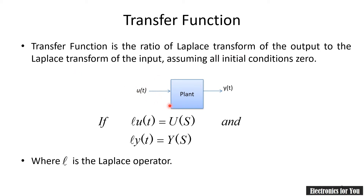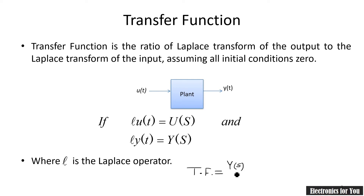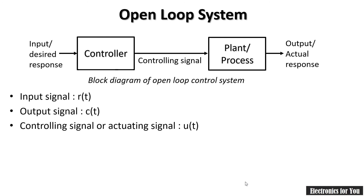Let us consider a system which has output y(t) and input signal u(t). If we take the Laplace transform of u(t), it is U(s), and the Laplace transform of y(t) is Y(s), where s is the Laplace operator and s is the Laplace constant. Then the transfer function, indicated by T(s), will be given by Y(s) divided by U(s).